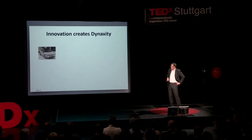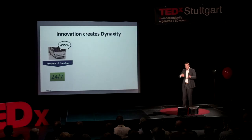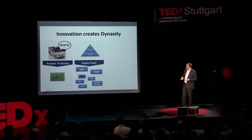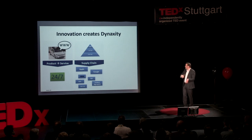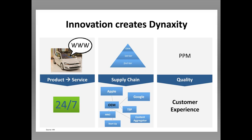If you take that Golf and add worldwide web functionality, it's called a Connected Car, and then everything changes. You're no longer offering a product you just give to the customer — you have to operate a service. You're no longer at the head of a supply chain hierarchy like a pyramid; you're in the middle of a network with Apple, Google, and other companies. And quality is no longer about measuring PPM — parts per million — it's about something like customer experience. So innovation creates danaxity.